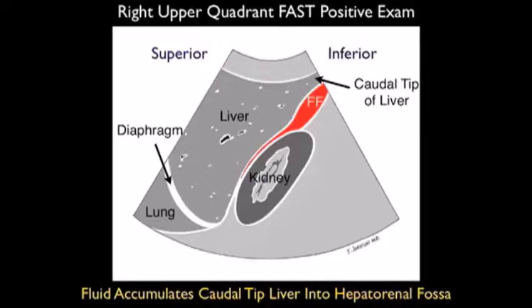This is very important to emphasize: many times fresh fluid can only be seen around that caudal tip of the liver, and then it will move into that hepatorenal interface or Morrison's pouch.